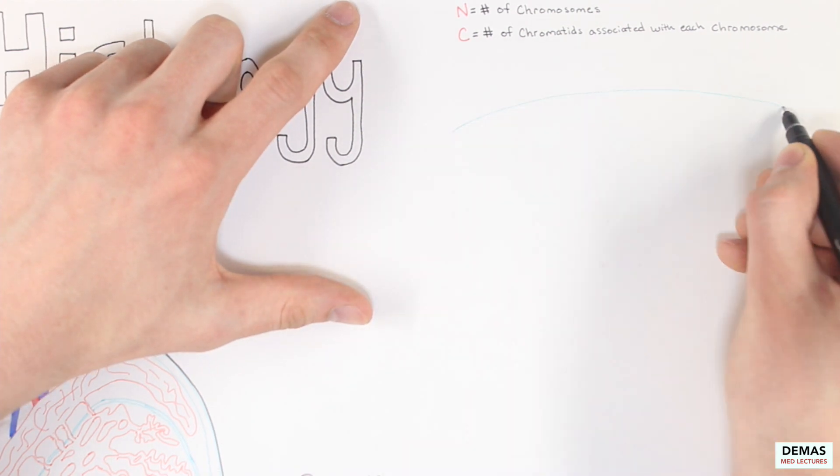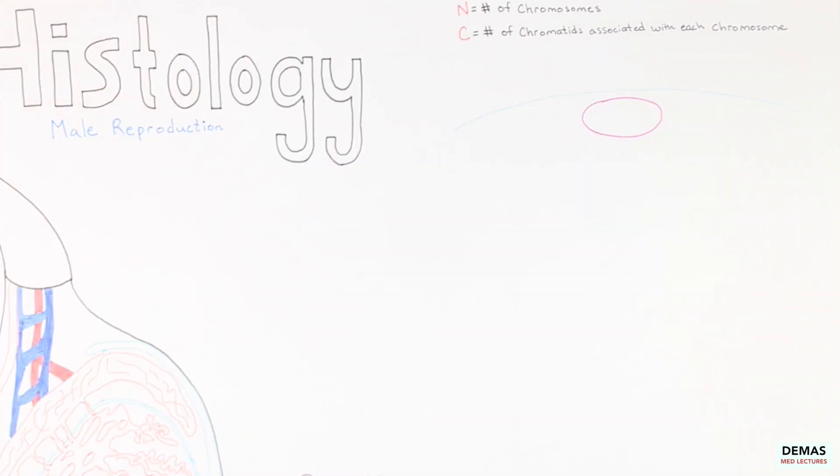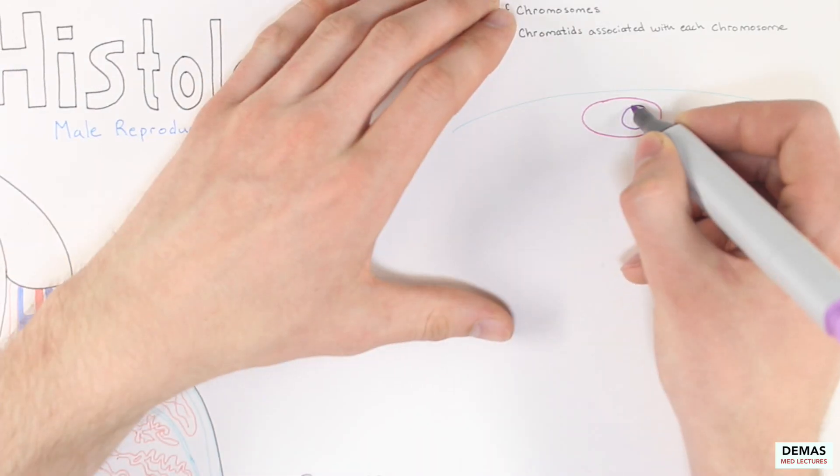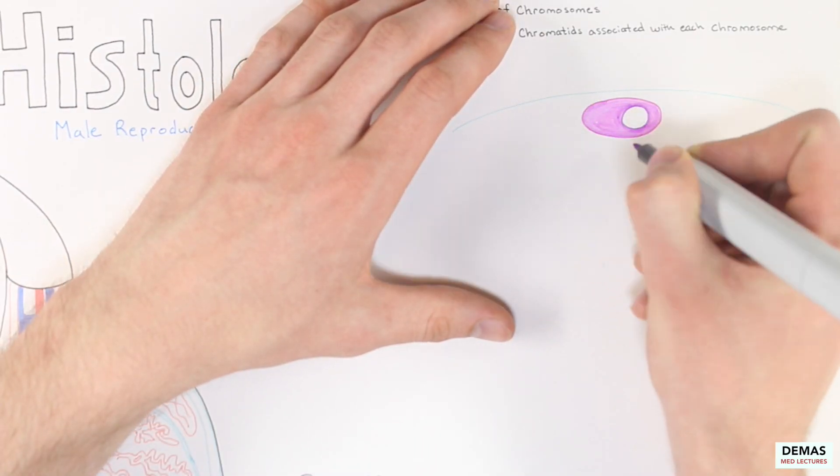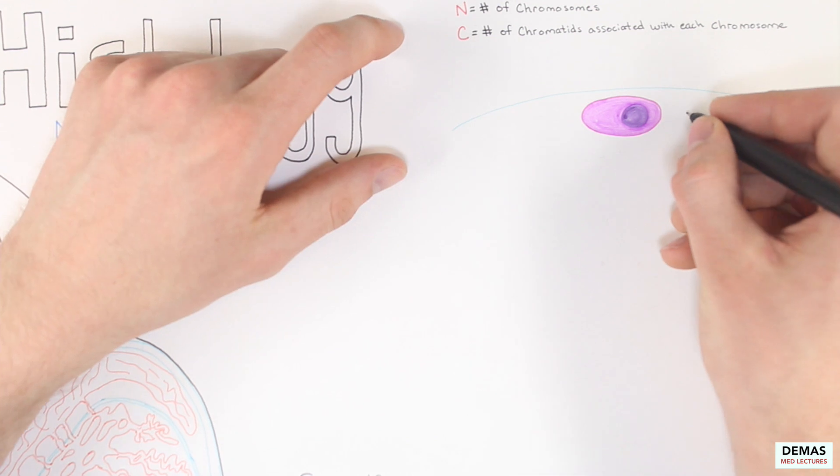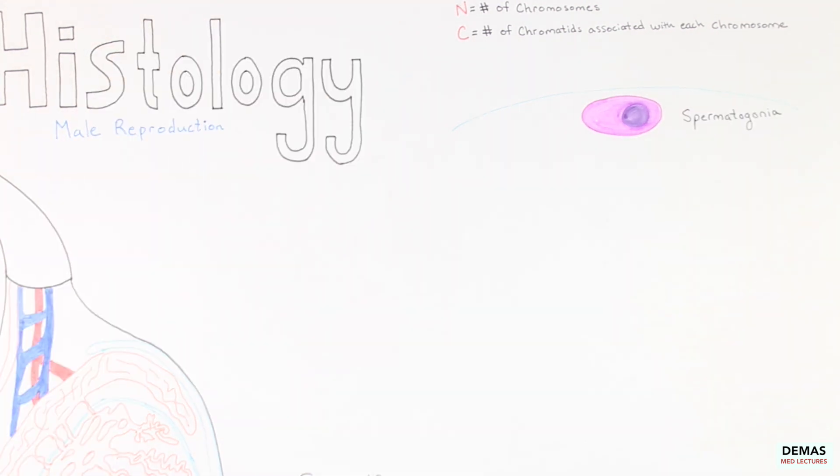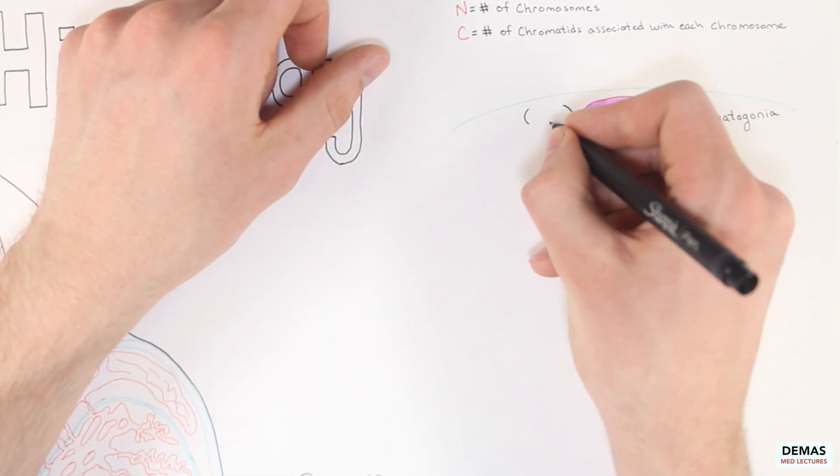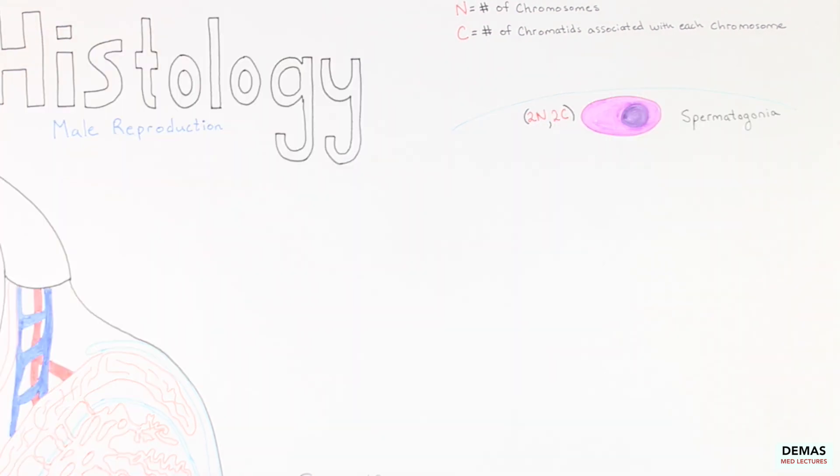The germ cells begin as spermatogonia, which are diploid cells that can either replenish their numbers by undergoing mitosis, or can undergo meiosis to ultimately form the haploid germ cells. Therefore, the spermatogonia is considered 2N2C, since it's similar to the other diploid cells in the body. The spermatogonia are found towards the outer edge of the seminiferous tubules, as shown here.